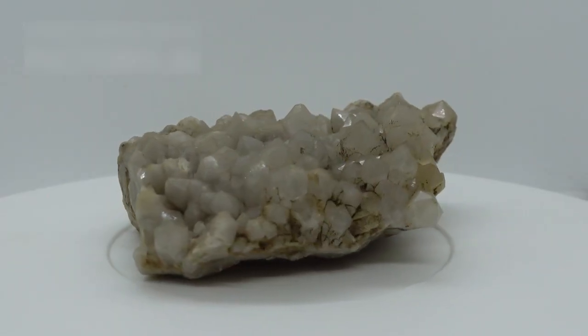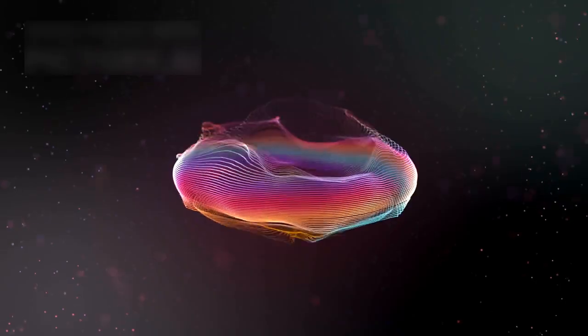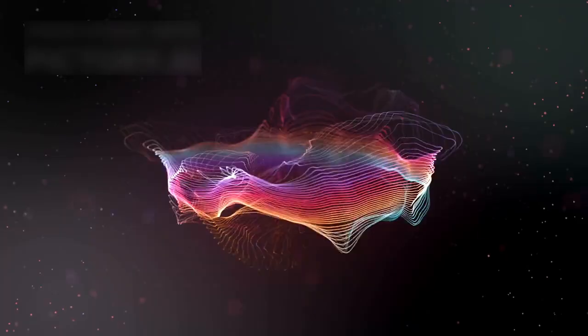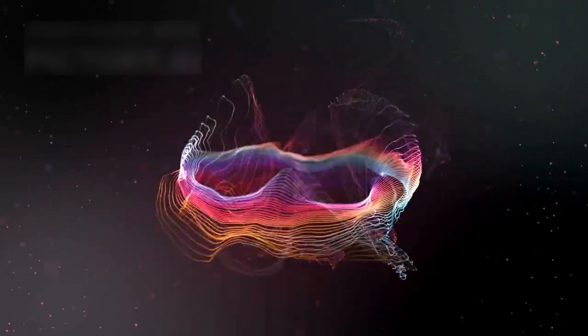The telescope also revealed that the object contains metallic minerals and unknown elements. These findings support the idea that it might come from a place where matter behaves in totally different ways compared to Earth or other planets in our system.